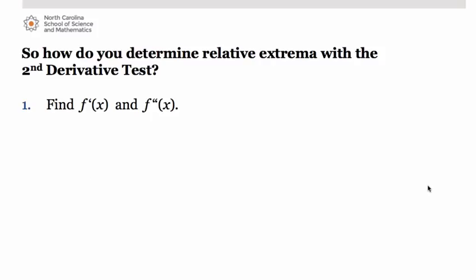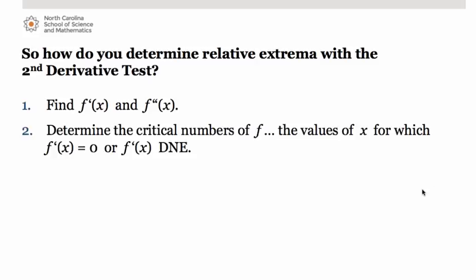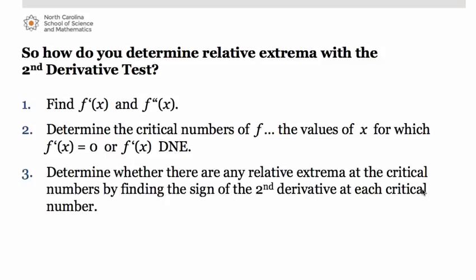So how do you determine relative extrema using the second derivative test? We need critical numbers, so we have to find our first derivative. Then we're going to substitute those critical numbers into the second derivative, so we need to find both the first and second derivatives of the function. Next, we determine the critical numbers — the values of x for which the first derivative equals 0 or does not exist. Finally, we determine whether there are relative extrema at those critical numbers by finding the sign of the second derivative at each one.